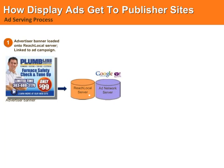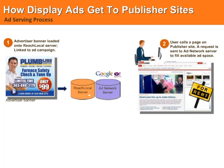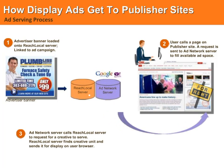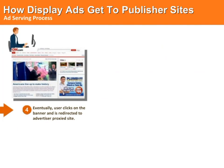Before anything else happens, each advertising creative unit, or banner ad, is loaded onto ReachLocal's server and it is then linked to one of our advertisers' campaigns. Then, when a user loads a page on a publisher's site, a request is sent to the ad network to fill the available ad space. The ad network then calls the ReachLocal server, requesting a creative component to serve. The ReachLocal server then finds the appropriate creative unit and sends it for display on the user's browser.